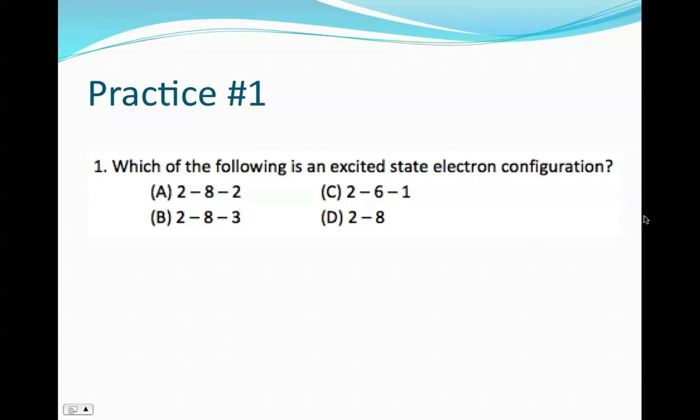Alright, so here's just some quick practice problems for you to try out, some multiple choice. So practice one, which of the following is in the excited state electron configuration? Well, if you look at your periodic table, A, B, and D, you can find on the periodic table. So that means C is our excited state configuration. We can also notice that normally this one electron would have gone down into the second energy level because it's not full yet, so another way to spot it.